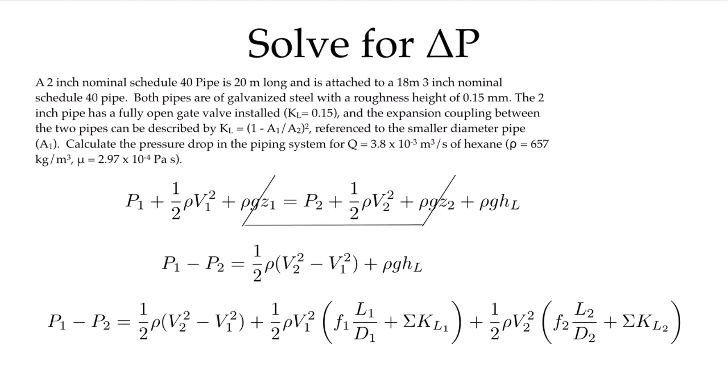Let's start as we always do with our Bernoulli equation. We have pressure term, kinetic energy term, gravitational potential term on one side, the two side, and of course our losses coming about because of the friction in the pipe and the fittings in the pipe. In this case, there is no elevation change, so we can cancel out these two terms here, and we're left with this.